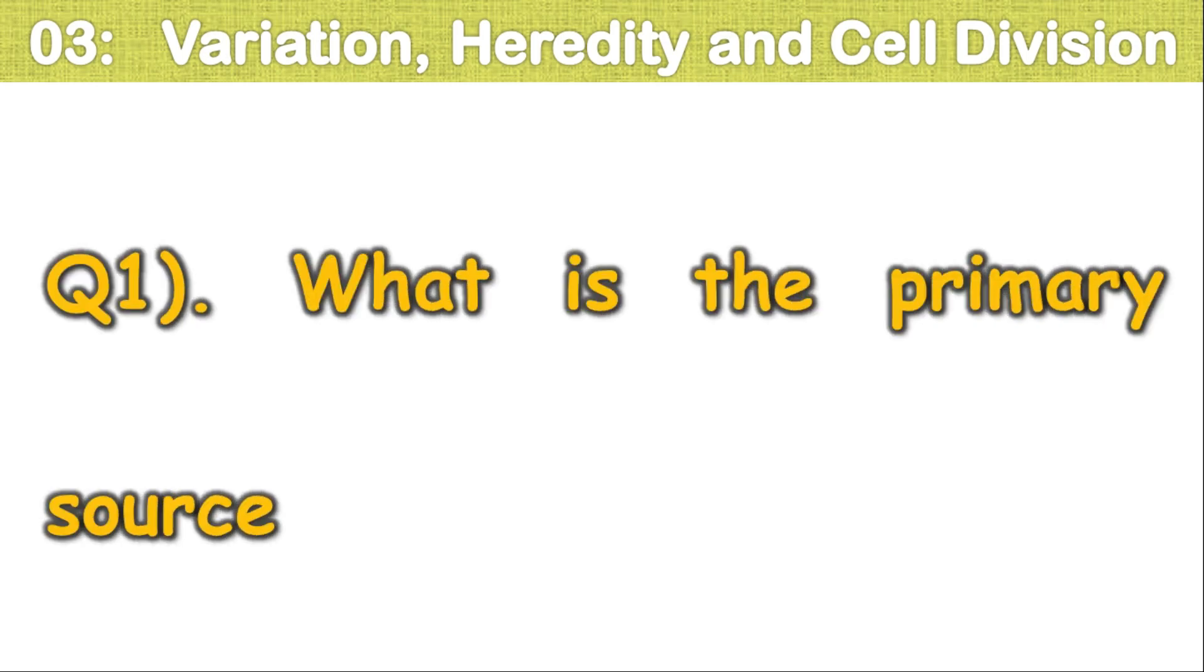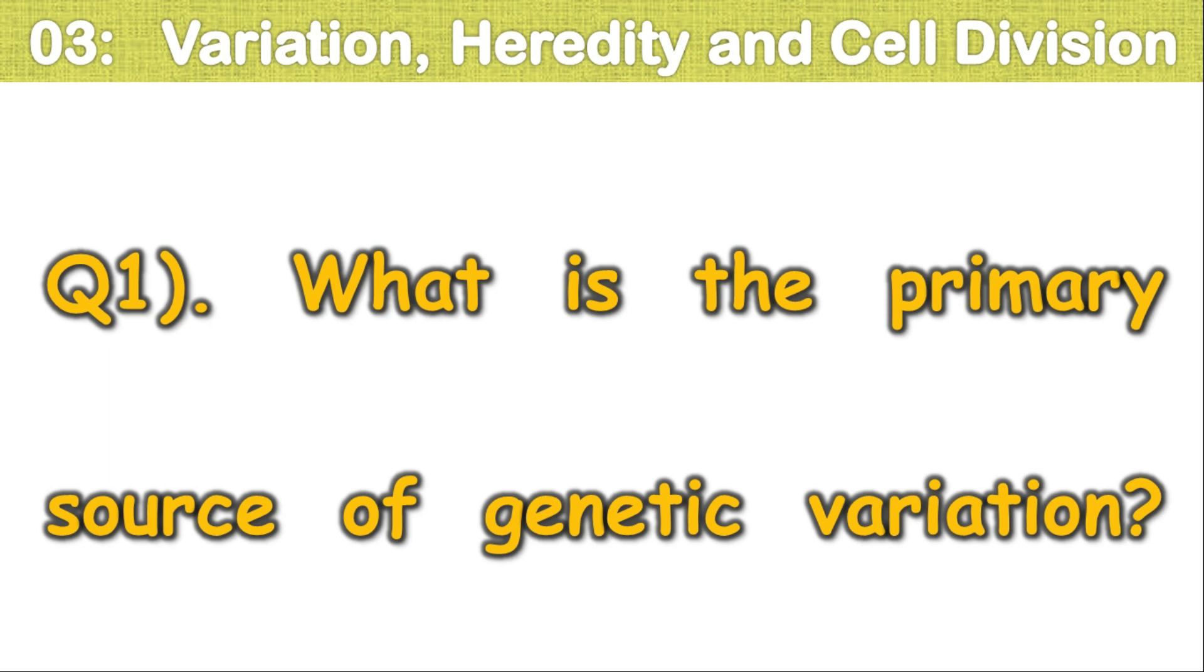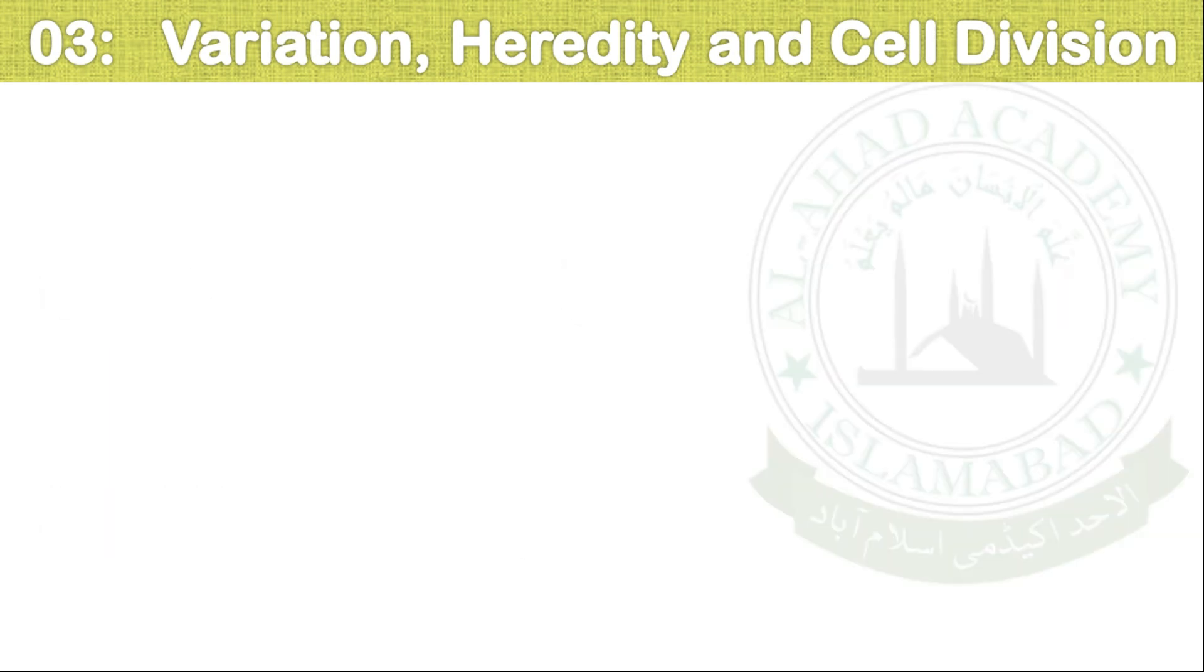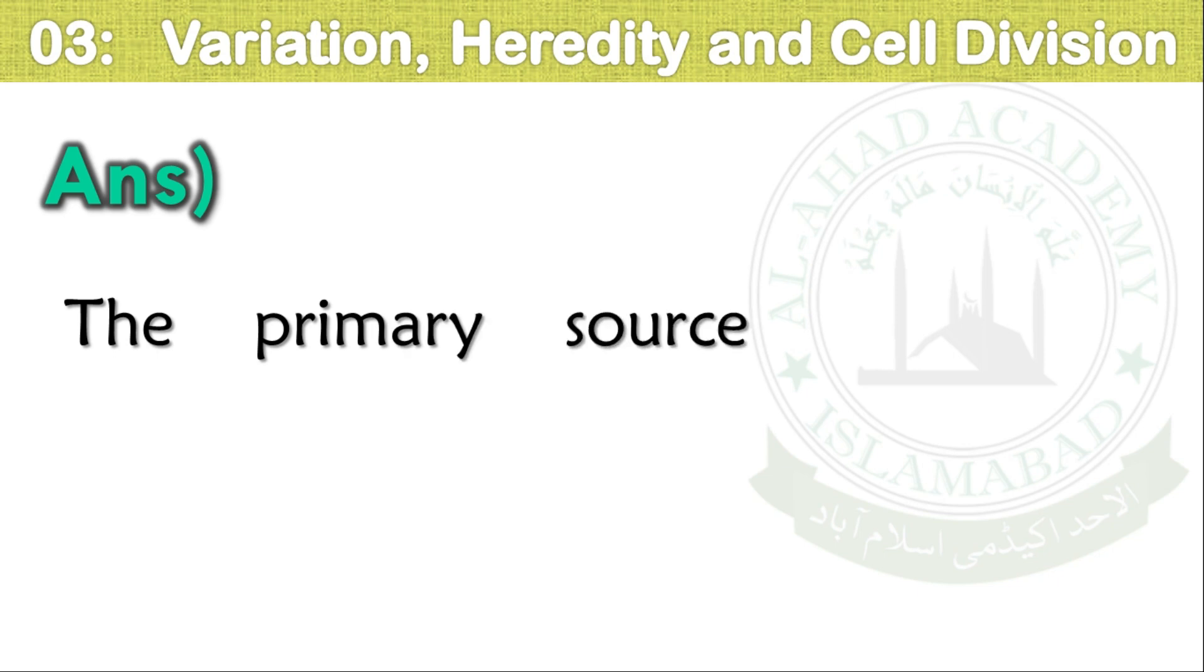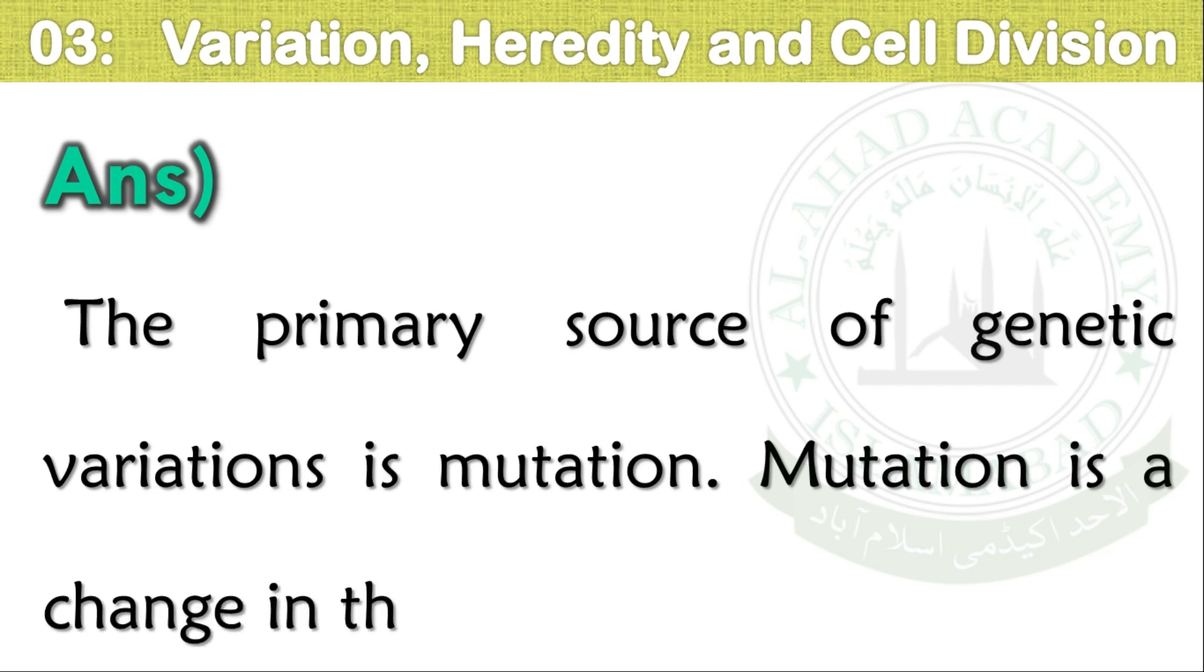Q1. What is the primary source of genetic variation? The primary source of genetic variation is mutation. Mutation is a change in genetic material.